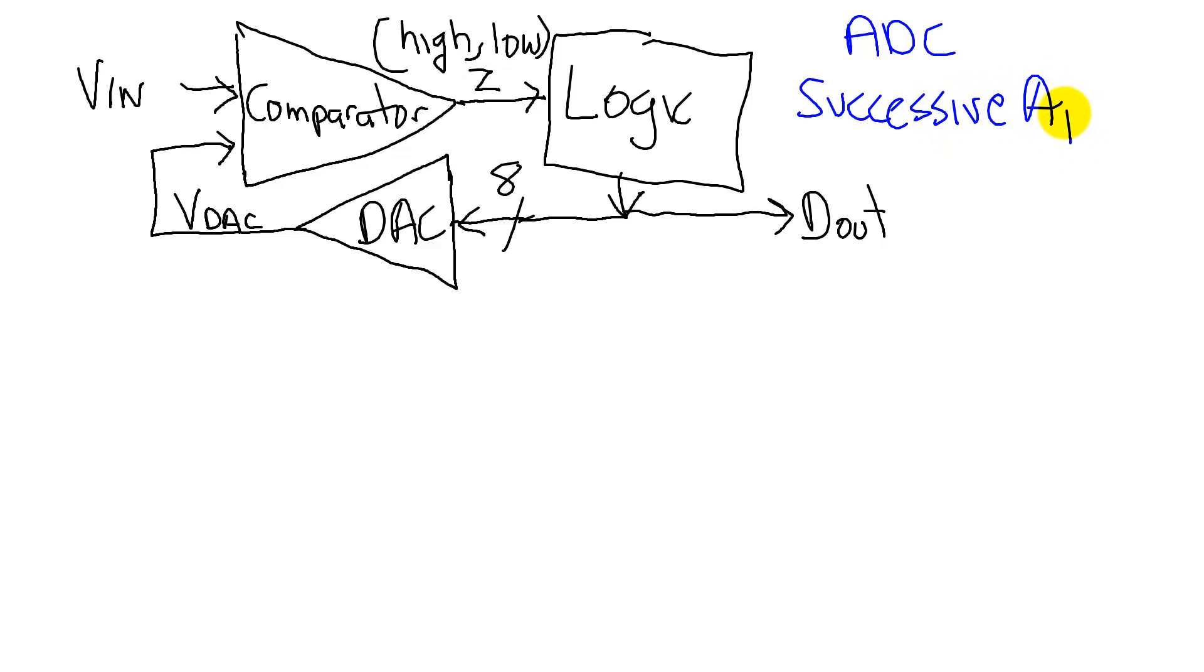There are a couple of components. The unknown input exists here that we're trying to sample and will eventually show up as a digital output. We're going to demonstrate how this works by playing a game.